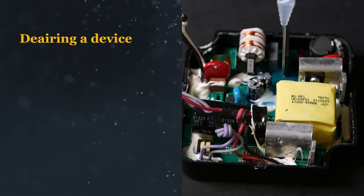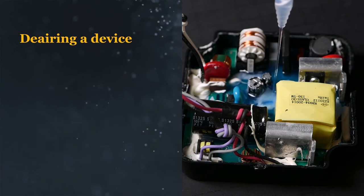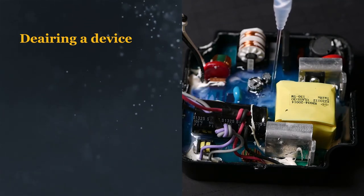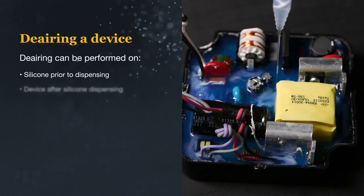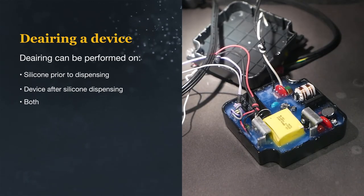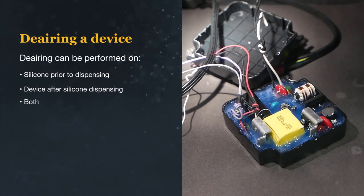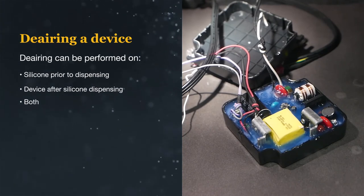Examples of vacuum de-airing up to this point have been on products prior to their application in a device. Alternatively, material can be dispensed on parts prior to de-airing and the entire part can be de-aired. This is extremely useful in removing air voids under small components and circuit boards.